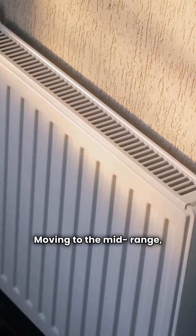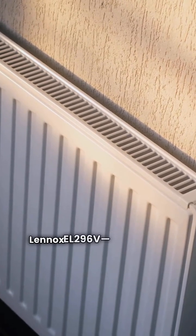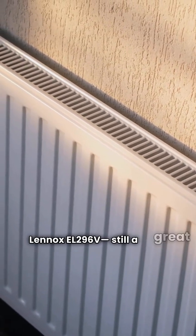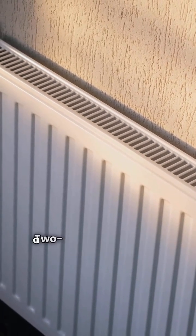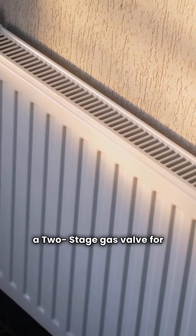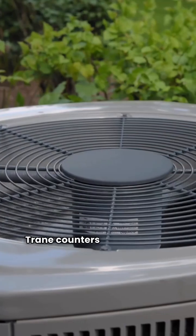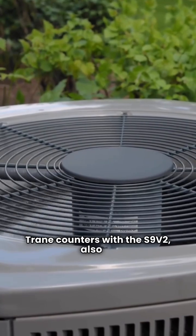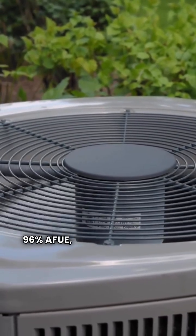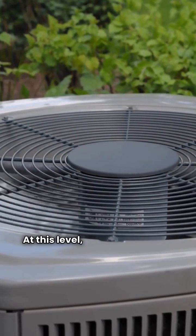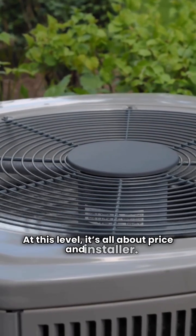Moving to the mid-range, check out the Lennox EL296V. Still a great 96% AFUE with a two-stage gas valve for comfort control. Trane counters with the S9V2, also at 96% AFUE and nearly identical specs. At this level, it's all about price and installer.